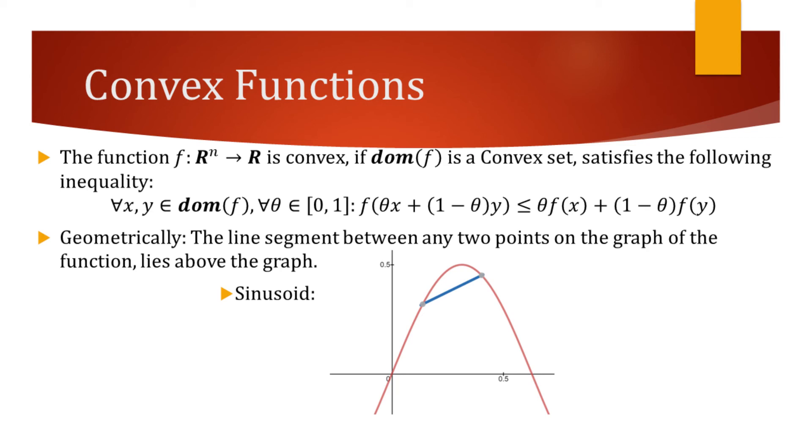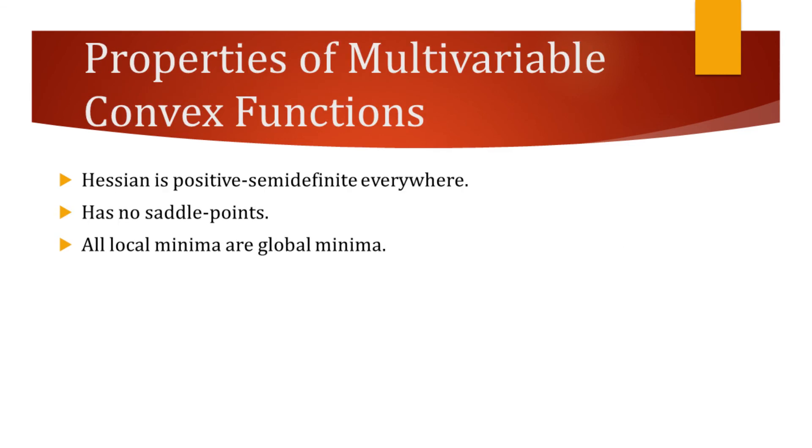Convex functions have properties that are very useful in optimization. For example, multivariable convex functions have a Hessian that is positive semi-definite everywhere. These kinds of functions have no saddle points, and all their local minima are global minima at the same time. These properties make convex optimization especially successful.